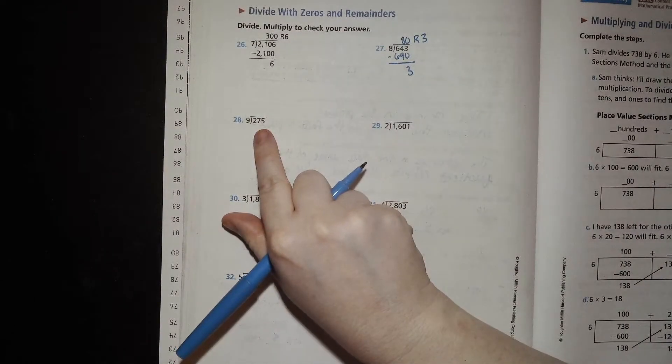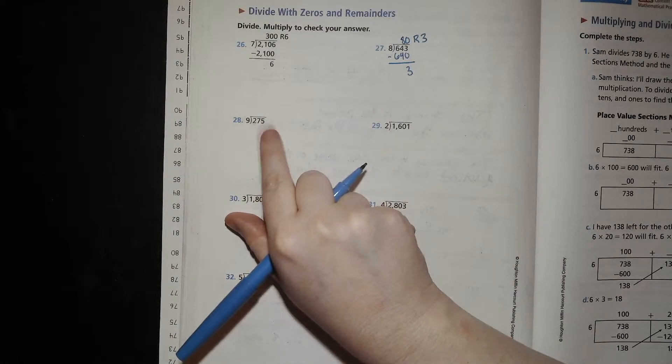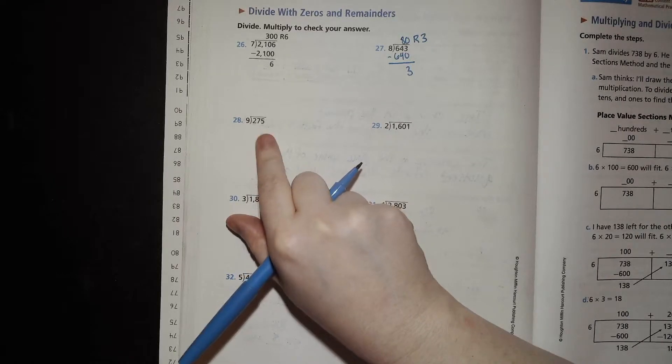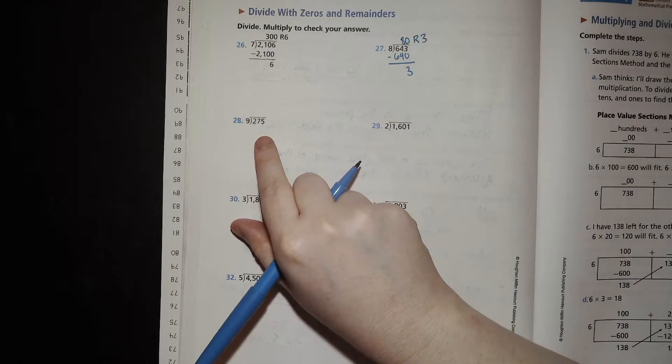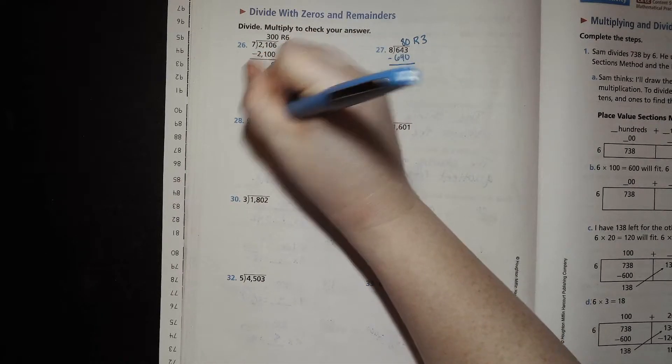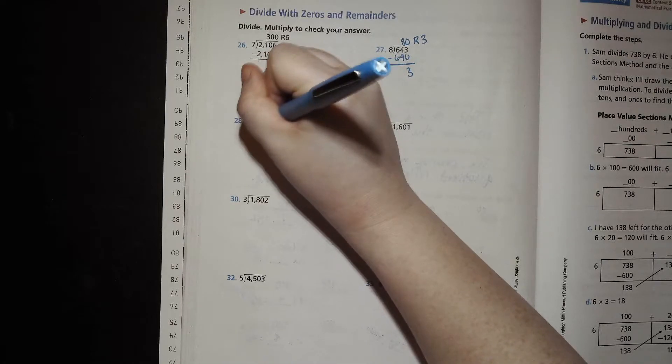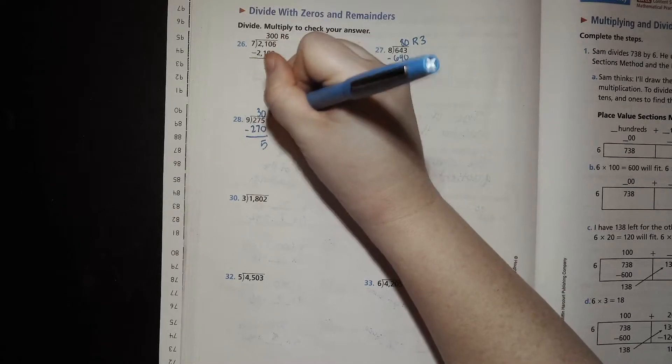9 goes into 275. How many times? Well, we can make 27 tens, right? Which is 270. How do we get 27 tens? Multiply 9 by 3 tens. 270. Subtract. 5. Remainder 5.